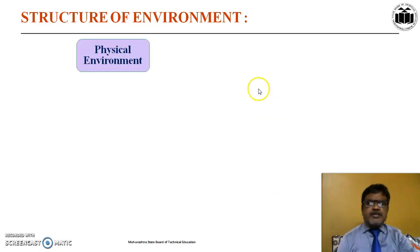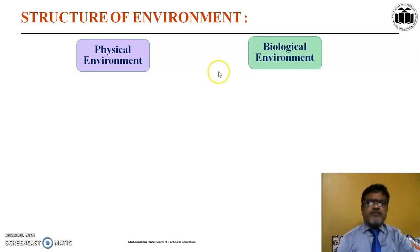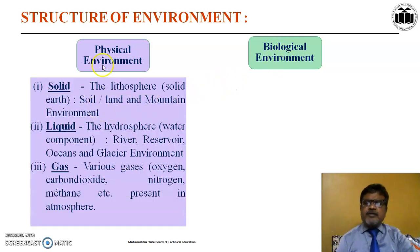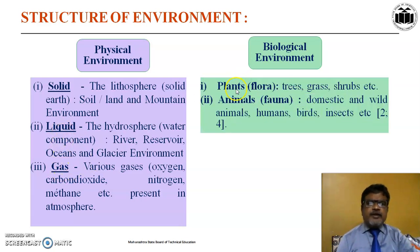We have to study the structure of environment. There are two structures of environment. First is physical environment structure, and second is biological environment structure. Physical environment structure includes solid, liquid, and gases. Biological environment includes flora, that is plants, and fauna, meaning animals.